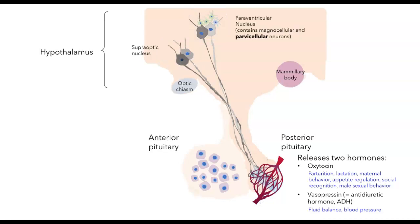What about the hormones from the anterior pituitary? The anterior pituitary releases six hormones: ACTH (adrenocorticotropic hormone), TSH (thyroid-stimulating hormone), prolactin, GH (growth hormone), and then FSH and LH — follicle-stimulating hormone and luteinizing hormone. These last two together are called the gonadotropins.